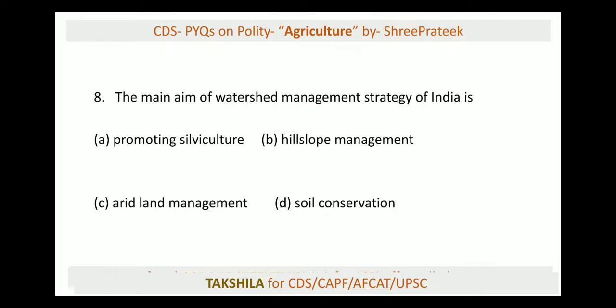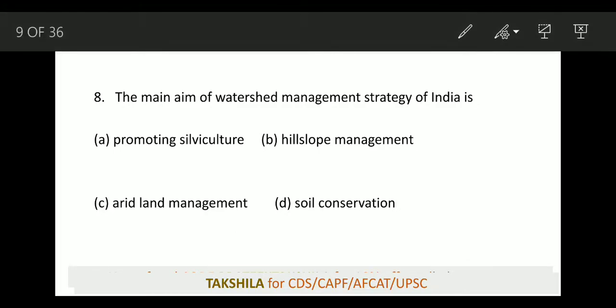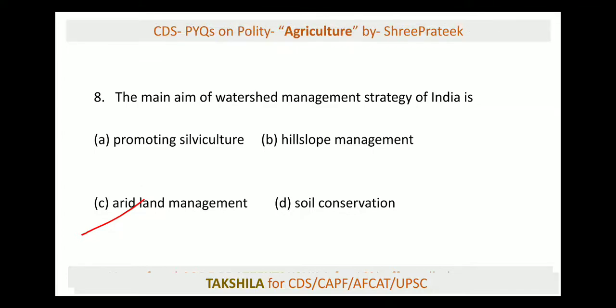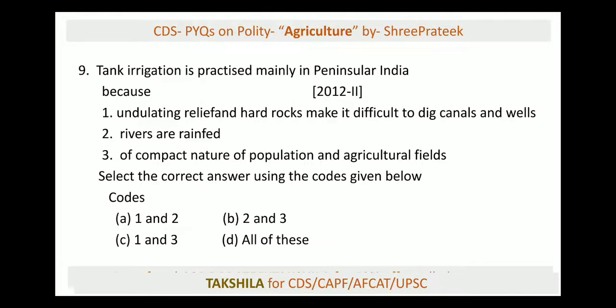Next: what is the main aim of watershed management strategy of India? Options include hill slope management, promoting silviculture, arid land management, and soil conservation. The correct answer should be soil conservation — that is what watershed management aims for. Arid land management is not the focus here.